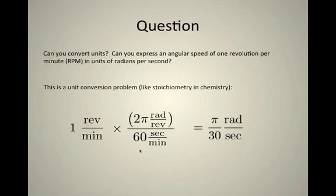This then becomes pi over 30 radians per second. And that's the answer to our problem. One revolution per minute is equal to pi over 30 radians per second.